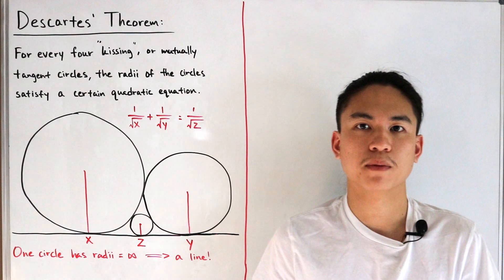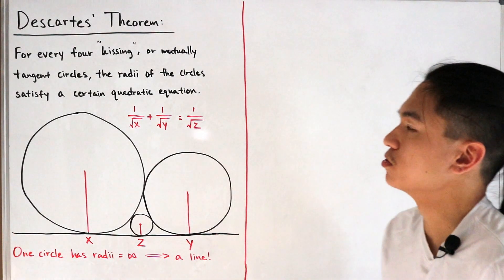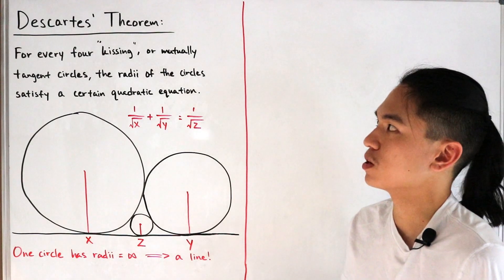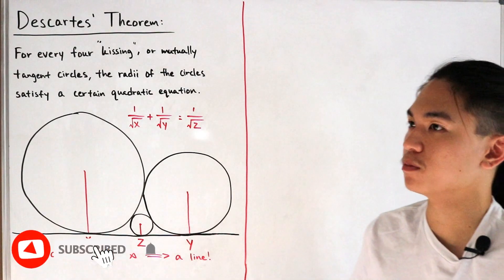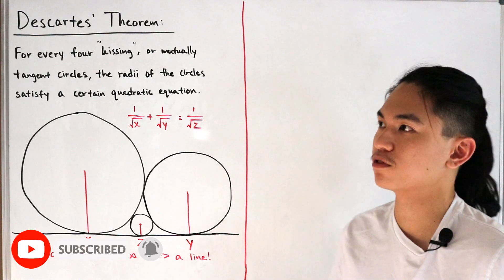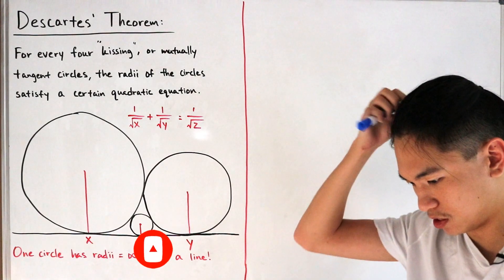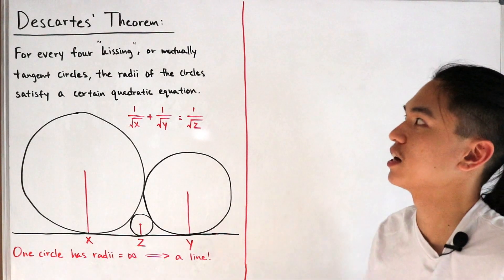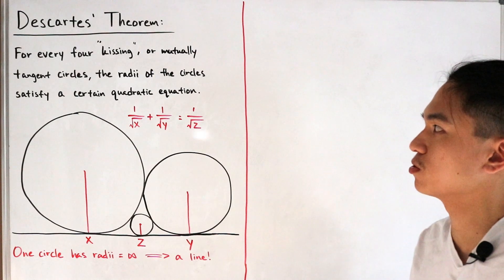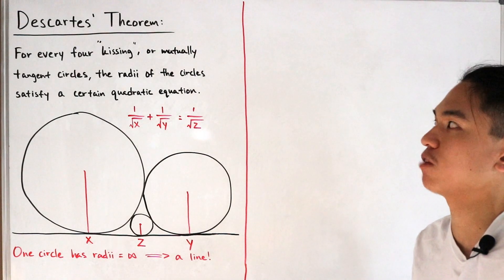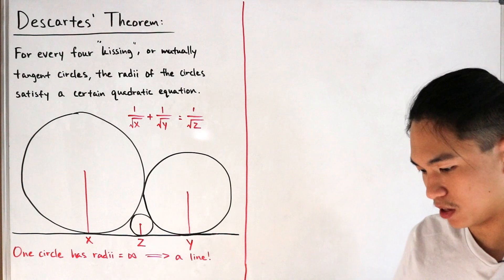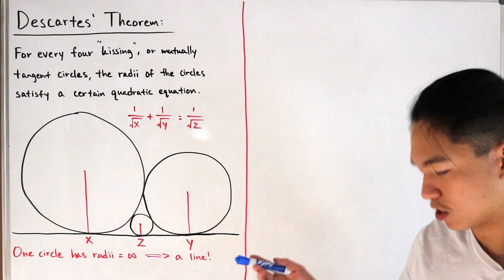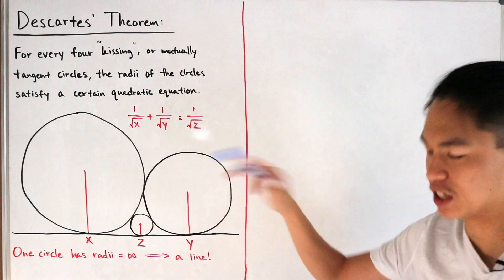Welcome back to another video. In today's video we have the following geometry theorem that we want to prove. This is known as Descartes' Theorem, discovered by mathematician René Descartes from 1643. The theorem states that for every four kissing or mutually tangent circles, the radii of the circles satisfy a certain quadratic equation. By solving the equation, one can actually construct a fourth circle tangent from the three given that are mutually tangent.